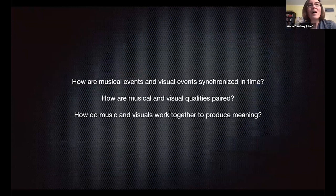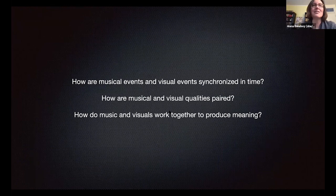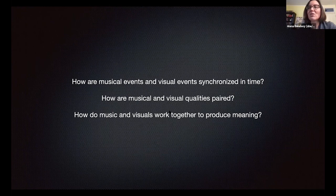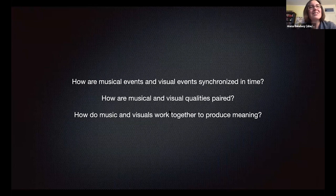Every one of these forms requires a series of artistic decisions regarding the interaction of music and visual design. One question concerns the synchronization of visual and musical events in time — visuals can synchronize with the music at the level of the beat, the measure, or the phrase, and interact with musical rhythms in complex accentual patterns. The second question concerns how music and visuals relate via shared qualities such as density, intensity, roughness, smoothness, highness, lowness, warmth, and coolness.